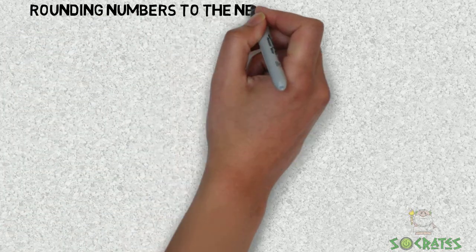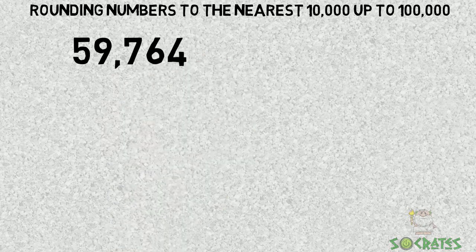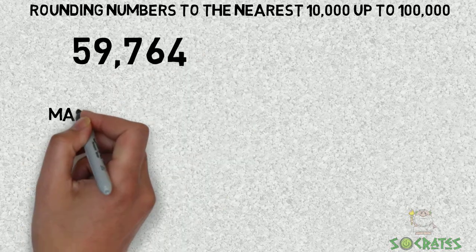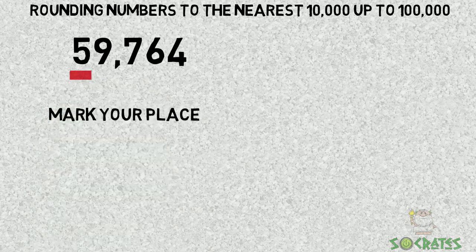Rounding numbers to the nearest 10,000 up to 100,000. Let's practice 59,764 to the nearest 10,000.